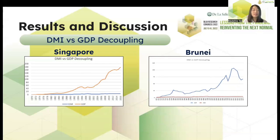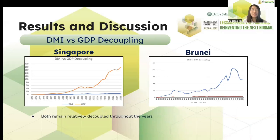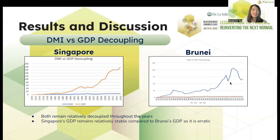Next, we will be discussing the DMI versus GDP decoupling. Decoupling means the breaking of the link between environmental bads and economic goods, and this occurs when the growth of an environmental pressure is less than its economic driving force — in this scenario, the GDP — over a given period. We can see that both remain relatively decoupled throughout the years. Relatively decoupled means that the growth rate of the environmentally relevant variable is positive but less than the growth rate of the economic variable. Singapore's GDP remains relatively stable compared to Brunei's GDP, which is more erratic, as seen in the graphs.